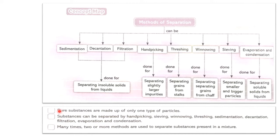Now let's see the summary of this chapter. First: pure substances are made up of only one type of particle. Second: substances can be separated by hand picking, sieving, winnowing, threshing, sedimentation, decantation, filtration, evaporation, and condensation. And lastly: many times two or more methods are used to separate substances present in a mixture. Here we stop with chapter 5 — Separation of Materials.